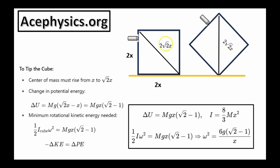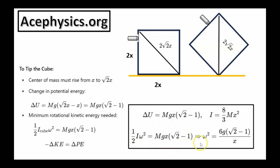Ignoring the mass of the bullet, the center of mass of the box is a distance of x from the bottom in its initial position, and a distance of root 2 times x from the bottom at the tipping point. So for the box to tip over, the center of mass must rise from x to root 2x, corresponding to a change in potential energy mg delta y. Immediately after the bullet strikes, the box has all kinetic energy. For it to rotate up, all kinetic energy must be converted into the change in potential energy. Setting one-half I omega squared equal to the change in potential energy allows us to solve for omega squared, the initial angular velocity of the block immediately after the bullet strikes.